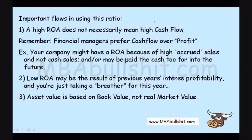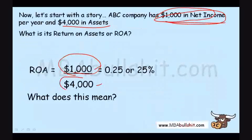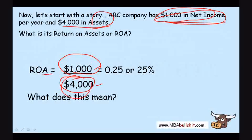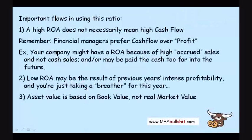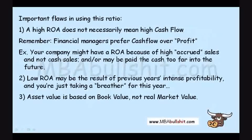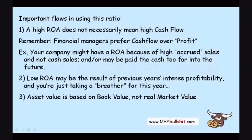Third, asset value is based on book value, not real market value. In this ratio, the figure in the denominator is supposed to be the value of the company's assets — but where do we get that $4,000? It is based on book value. For example, your company may have assets in the form of a building. The value of that building if you sell it might be $1,000,000, but your accountant, using the rules of generally accepted accounting principles and depreciation, might value the building at $2,000,000.